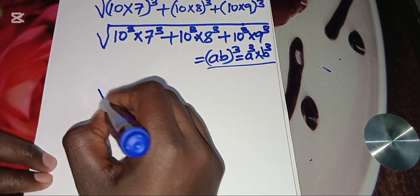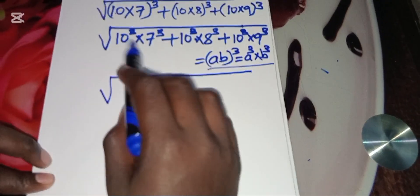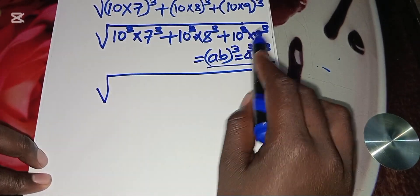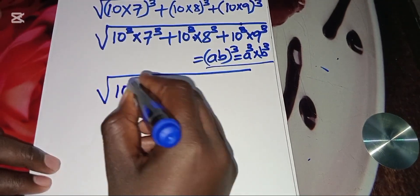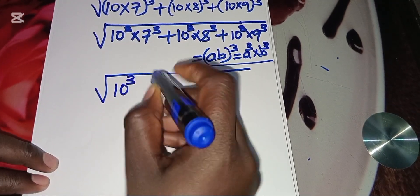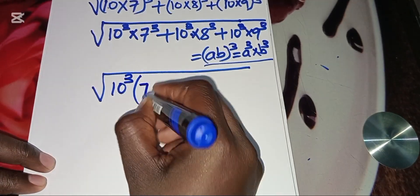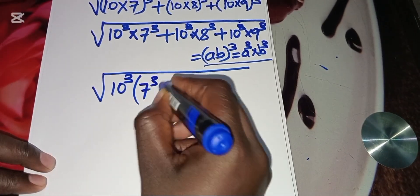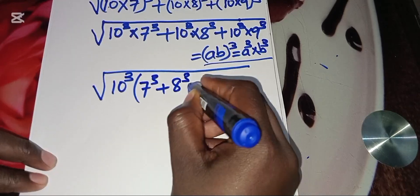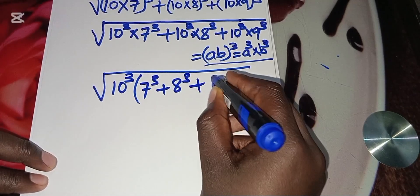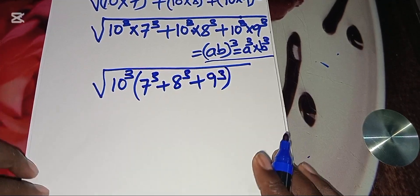From our expression, you realize that 10 cubed is common to all three parts, so we factor out 10 cubed and we're left with 7 cubed plus 8 cubed plus 9 cubed inside the bracket.